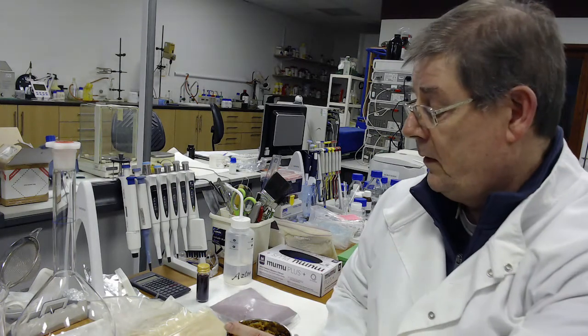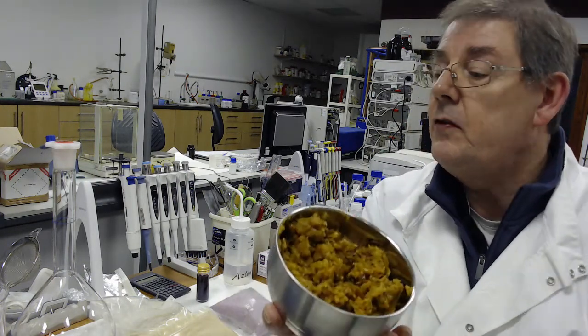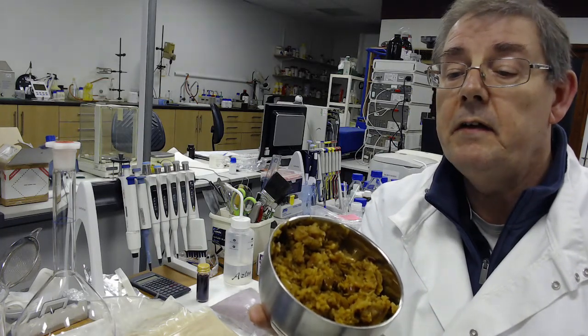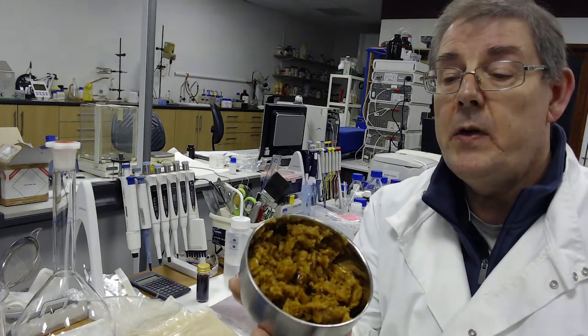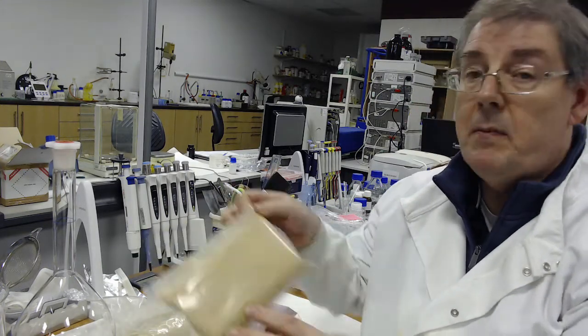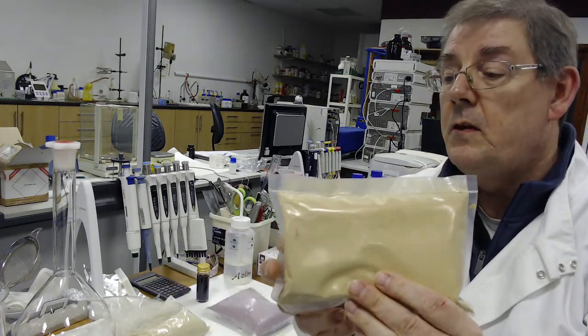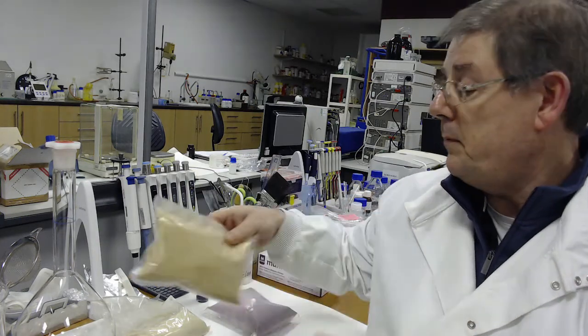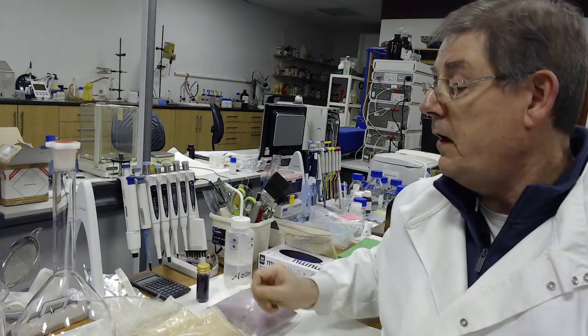So for example, this is apple pomace, which is produced when we make apple juice or cider. This is the leftover material. We can process this into a powder such as this, which could itself be used as a food ingredient, but we can also further process this to obtain other interesting chemicals.